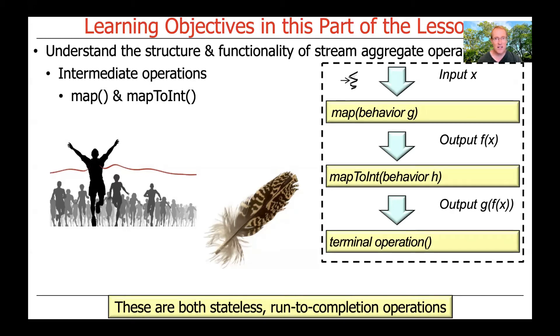They're also known as run-to-completion operations, and that means that unless something strange happens, like an exception or your program crashes, they'll run through every element in the stream that is presented to them as an input stream.